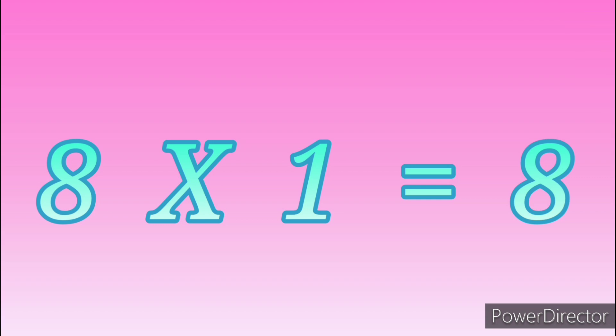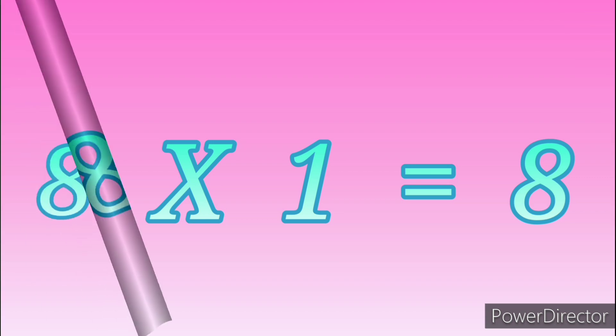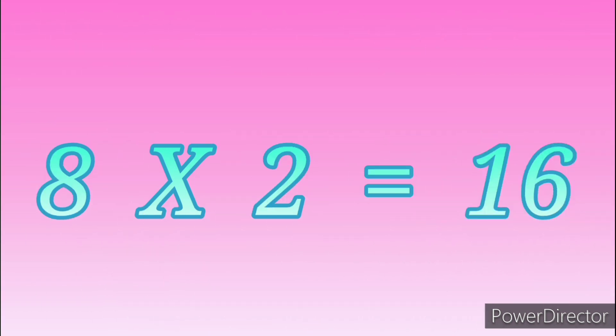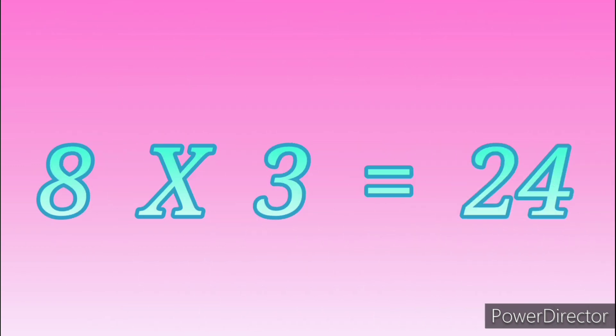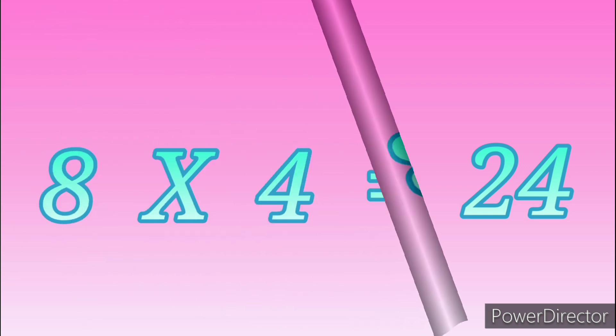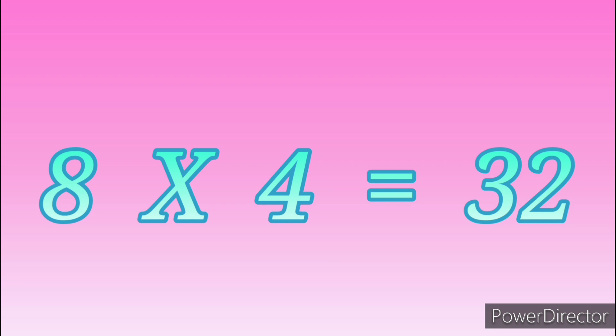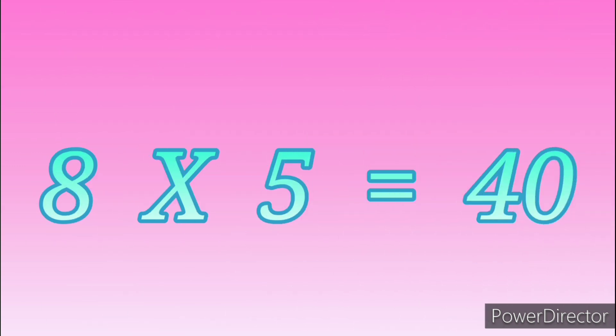Table of Eight. 8 ones are 8. 8 twos are 16. 8 threes are 24. 8 fours are 32. 8 fives are 40.